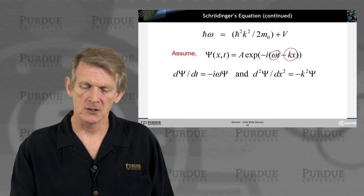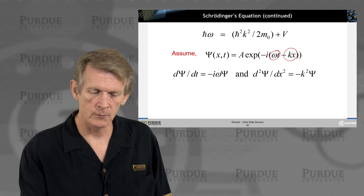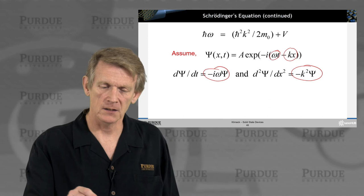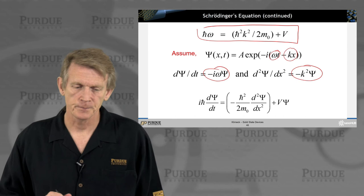And identify terms as i omega psi and minus k squared psi in this expression up here. And if you do that, you end up having an expression that ih bar d psi dt has a spatial dependent...